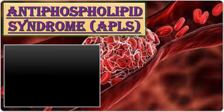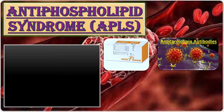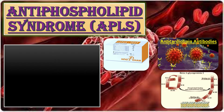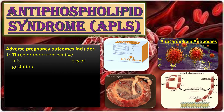Antiphospholipid syndrome is the most important treatable cause of recurrent miscarriages. It refers to the association between antiphospholipid antibodies — lupus anticoagulant, anticardiolipin antibodies, and anti-beta-2 glycoprotein antibodies — and adverse pregnancy outcomes or vascular thrombosis.